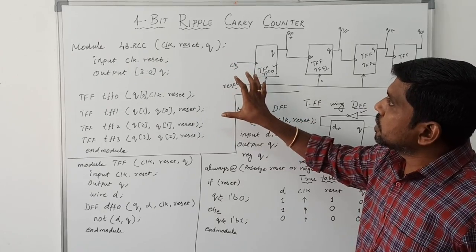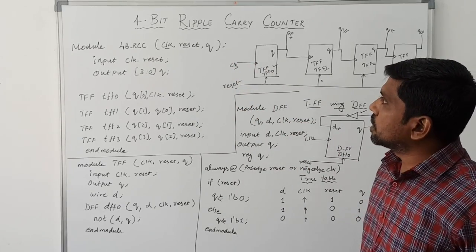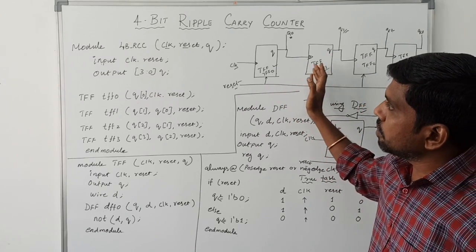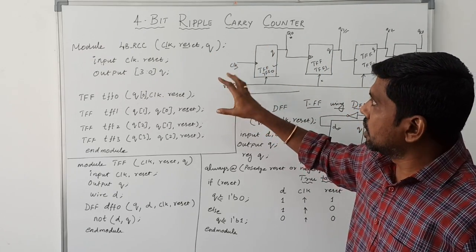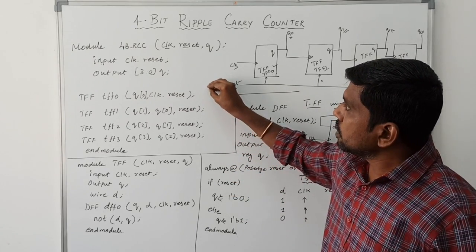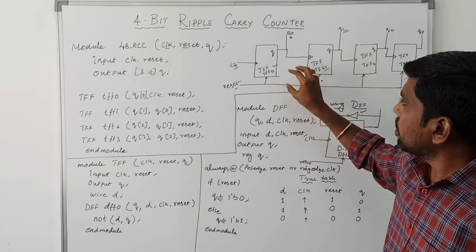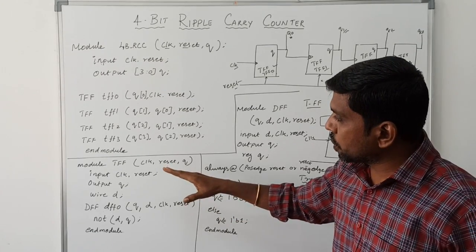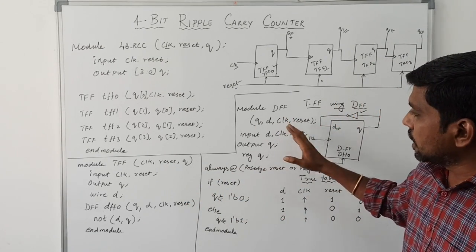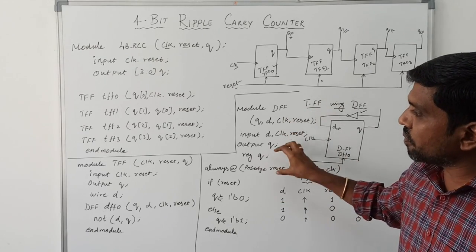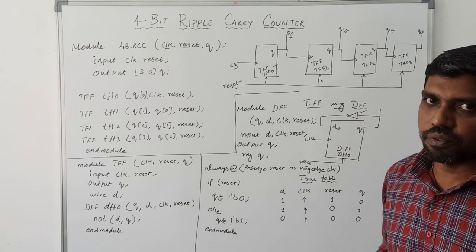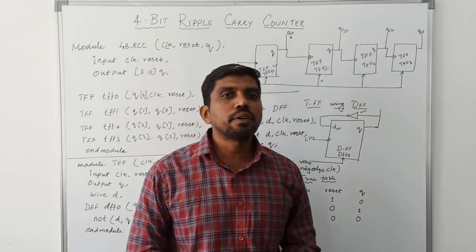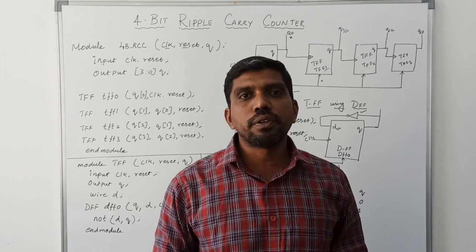This is the simple way to write a 4-bit ripple carry counter. First draw the block diagram, then write the program for the module. In this module we use T flip-flop and D flip-flop, so we define both. Thanks for watching — if you are watching for the first time, kindly subscribe and support us to make more videos. Thank you.